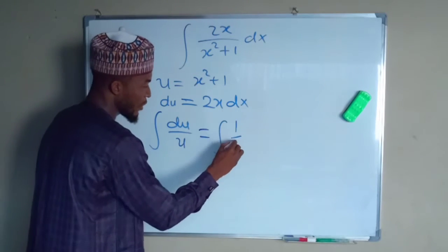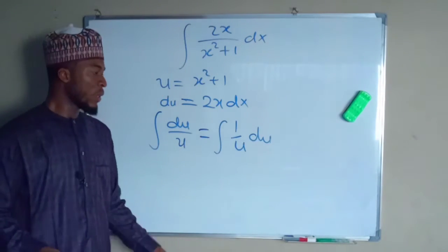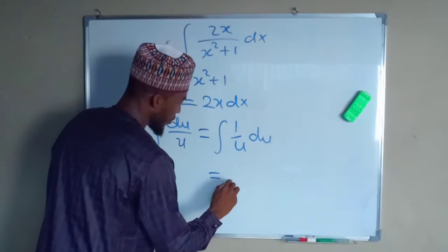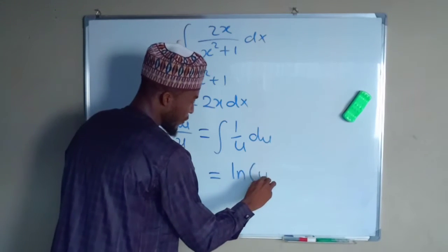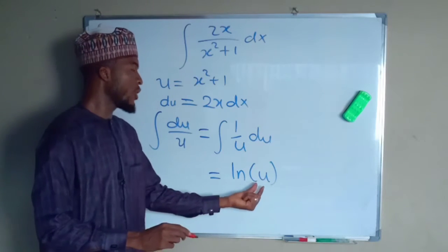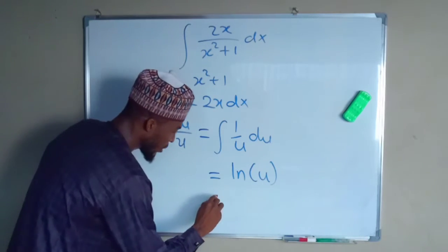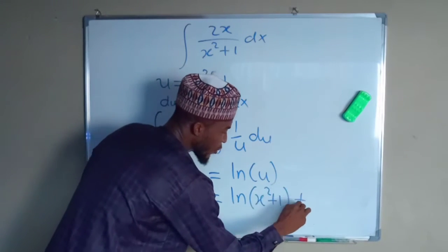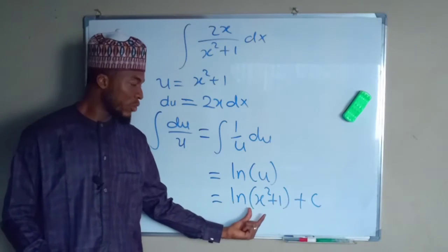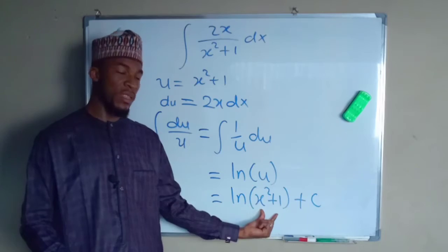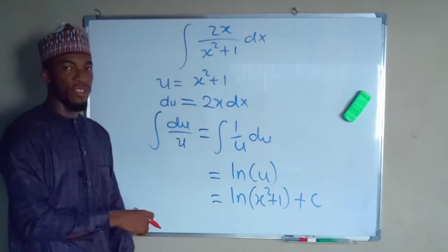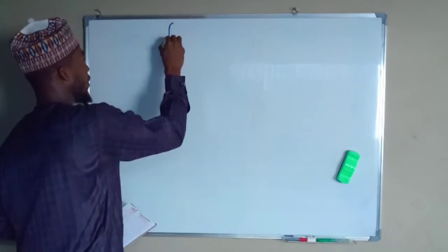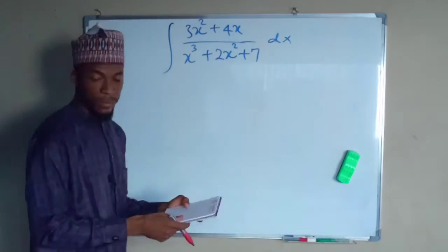This is the same as the integral of 1 over u du. We have already proved that the integral of 1 over u is the natural log of u. So this is equal to the natural log of u, but u is equal to x squared plus 1. Therefore the answer is the natural log of x squared plus 1 plus the constant of integration. We don't have to include the absolute value sign here because this value is always positive.